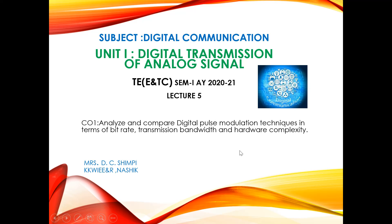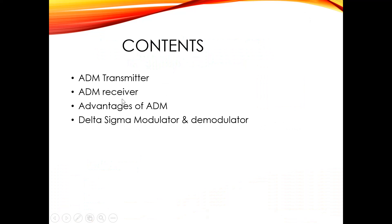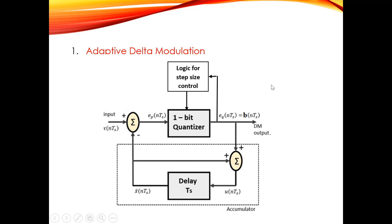Today we are going to discuss ADM - the adaptive delta modulation system - from digital communication. The contents are: ADM transmitter, ADM receiver, advantages of ADM, delta sigma modulator, and demodulator. In the last lecture we studied the delta modulator system - its advantages, disadvantages, transmission bandwidth, and bit rate. One disadvantage of the delta modulator system is it has two distortions: slope overload distortion and granular noise, which are basically due to the step size being fixed.